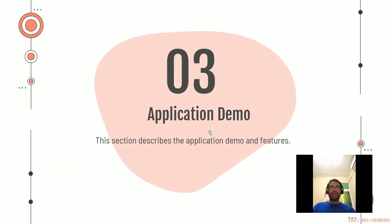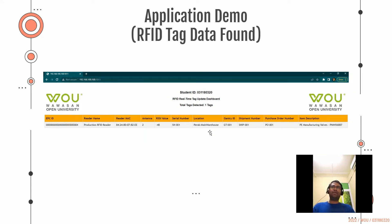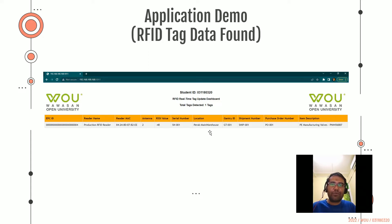For the application demo, there are two basic scenarios. The first is when RFID tag data is not found or multiple tags are not found — they are still shown in the web browser but most columns are replaced with 'not found/not registered', because the client needs to know what tags are being read by the gantry. The second scenario is when RFID tag data is found — the customer sees what is actually stored in the database, so they know what items are flowing through the RFID gantry.